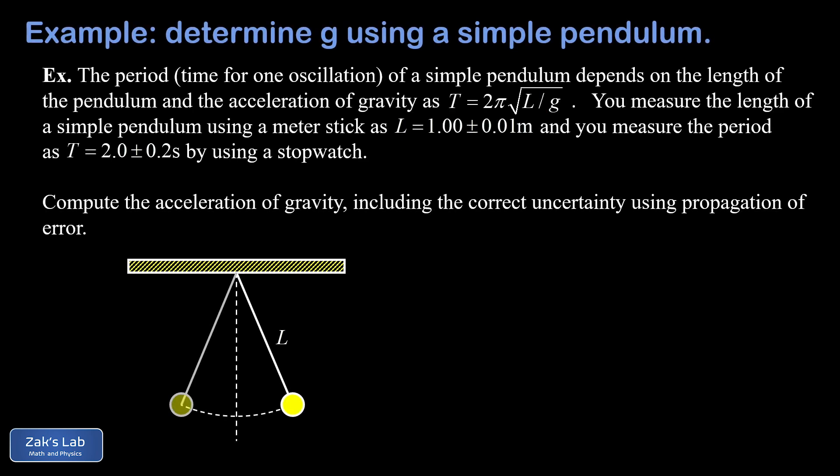In this problem, we're calculating the acceleration of gravity, little g, by using the oscillation of a simple pendulum. We're told how the period of a simple pendulum depends on the length of that pendulum and the strength of gravity, little g.